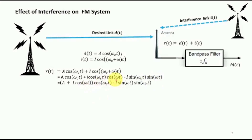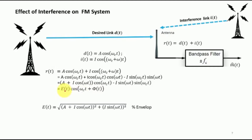In the third equality, cos(ωc·t) is taken as common. The leftover terms are A + i·cos(ωt), and the third term appears with sin(ωc·t) and coefficient i·sin(ωt). From this received signal we can detect the envelope as well as the phase φ(t). The envelope is the coefficient of cos(ωc·t), and taking the square root gives us √(A + i·cos ωt)² + (i·sin ωt)². The phase φ(t) is tan⁻¹(b/a).